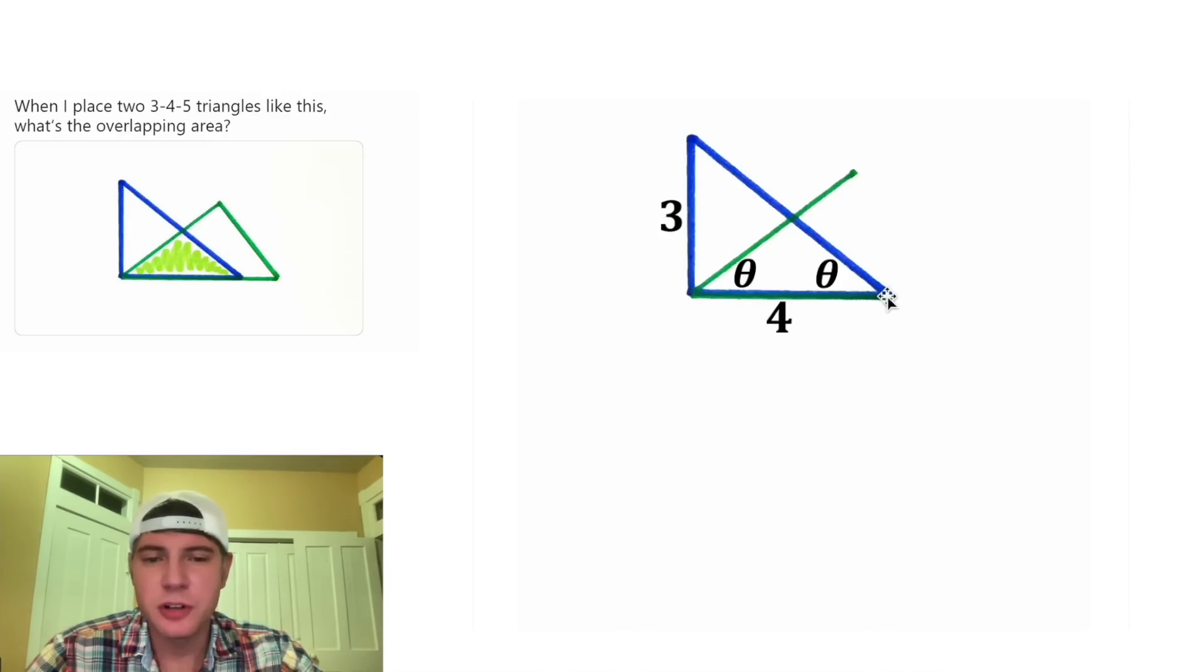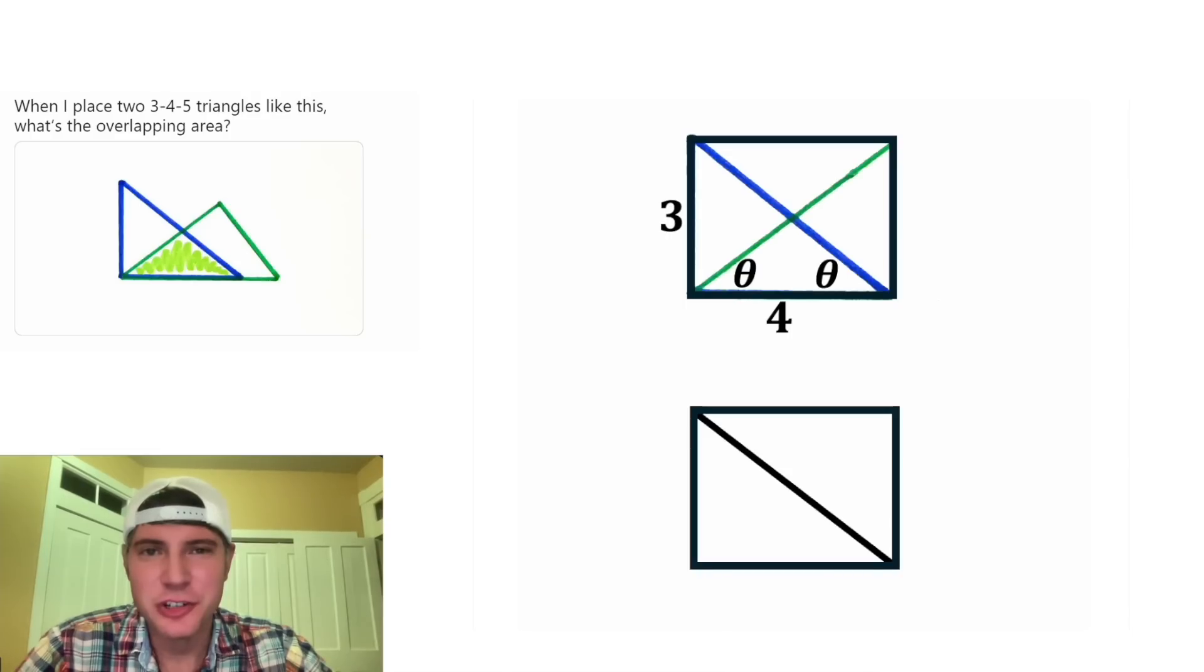Next, I want to construct a rectangle that has these two sides and these two sides. Since this one is a diagonal, and this angle equals this angle, we know that if we extend this one, it will also be a diagonal. And that's universally true.